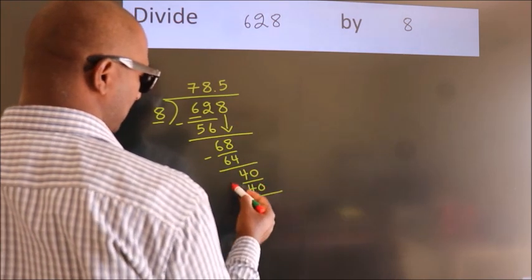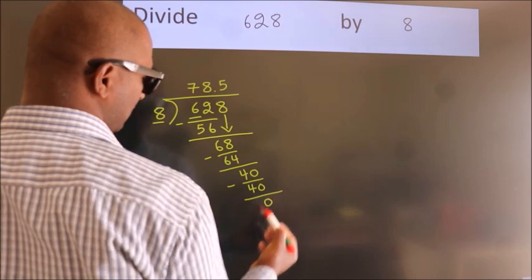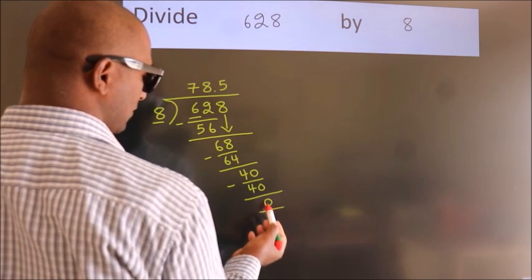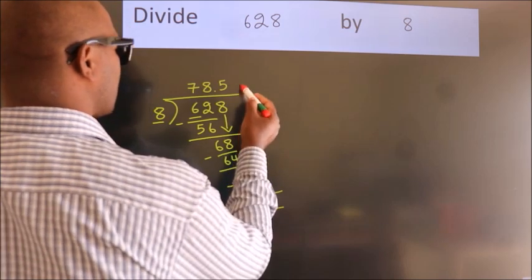Now we subtract. We get 0. Here we got remainder 0, so this is our quotient.